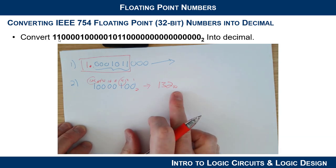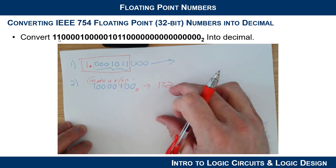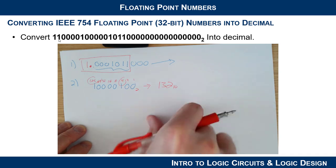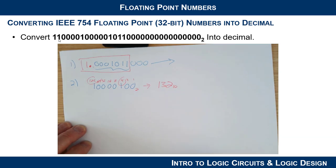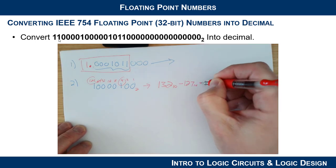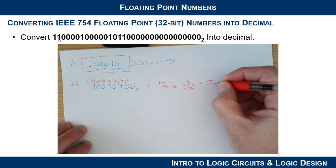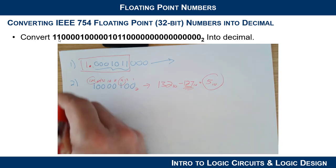But remember, that has a bias in it. So we added in 127 in order to shift the exponent up so that the exponent only was a positive number from 0 to 255 or 1 to 254. But what we have to do is you simply subtract out the bias of the 32-bit floating point number, and you're left with the original exponent, which was 5.